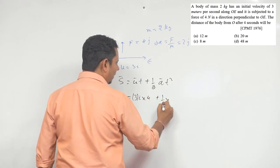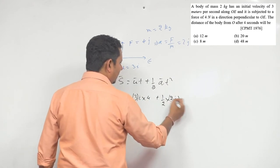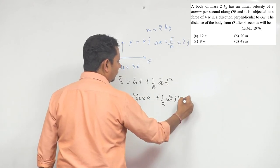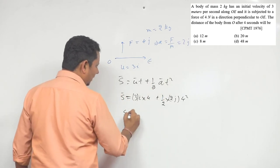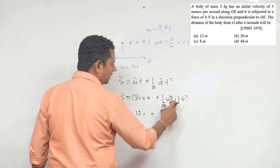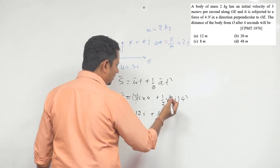In 4 seconds, 4 squared. So s becomes 12i cap plus this becomes 16j cap.